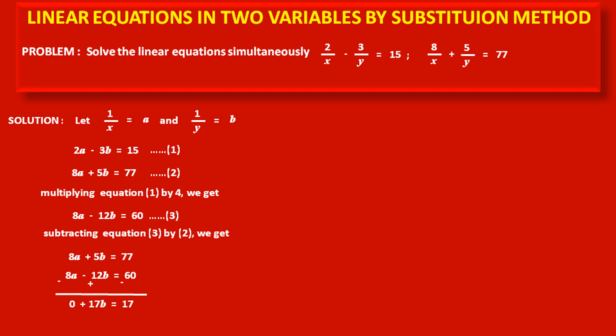So 17b = 17. Dividing both sides by 17, we get b = 1.